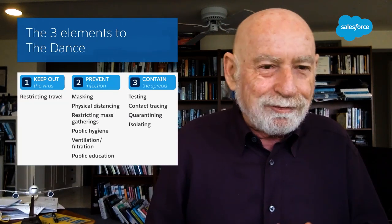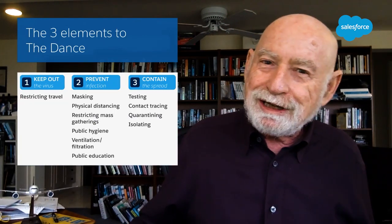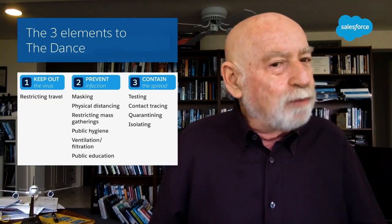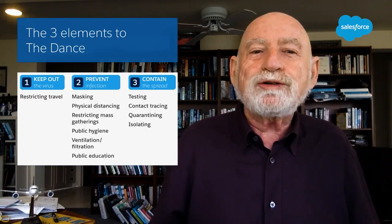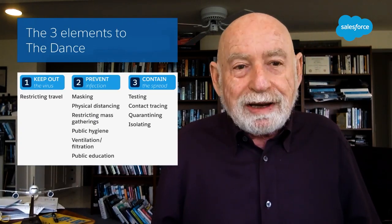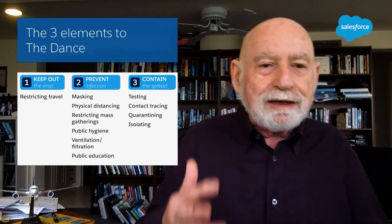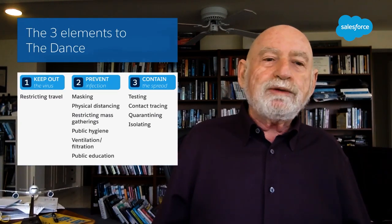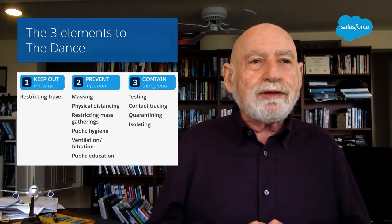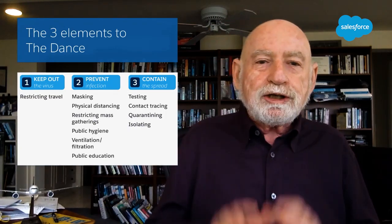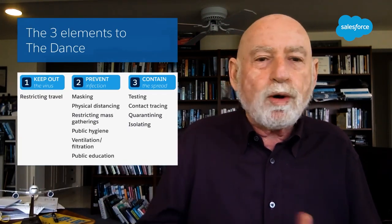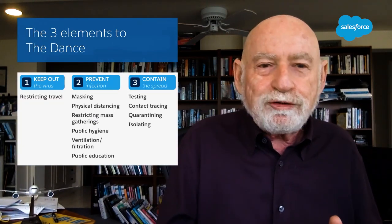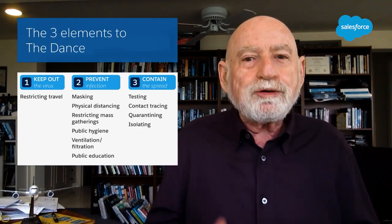Step one is keep it out — restrict travel. Island nations and island states can do that: Hawaii, New Zealand, and Australia as an island continent. Most places have a very hard time restricting travel. The second is prevent infection — masking, physical distancing, hand washing, public education, and potentially dealing with ventilation and filtration given concerns about air conditioning. The third is containing it if you have it — testing, tracing, quarantining, and isolating. So: keep it out; if it comes in, prevent further spread; and contain the spread that happens. Those are the three elements of the dance.